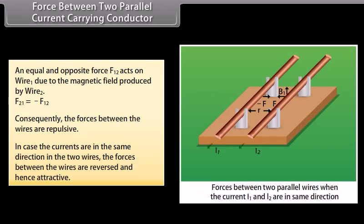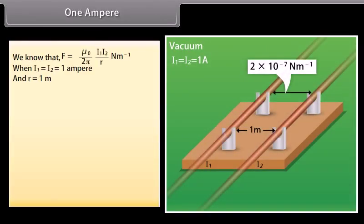When the currents are in the same direction in the two wires, the forces between the wires are reversed and hence attractive. Using F = (μ₀/2π) × (I1I2/R), when I1 = I2 = 1 ampere and R = 1 meter, the value of F = 2 × 10⁻⁷ newton per meter of length of conductor.